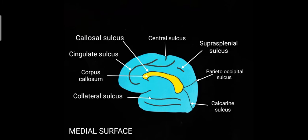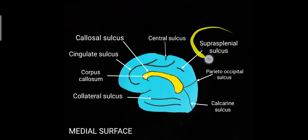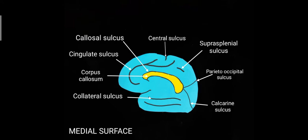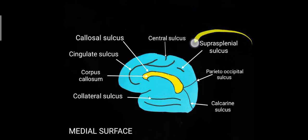On the medial surface of the parietal lobe you can see a horizontal sulcus that is the suprasplenial sulcus. These namings are according to location with respect to the corpus callosum. The corpus callosum itself has different parts that we will discuss later. Just keep in mind that in the parietal region on the medial surface there is one horizontal sulcus — the suprasplenial sulcus.